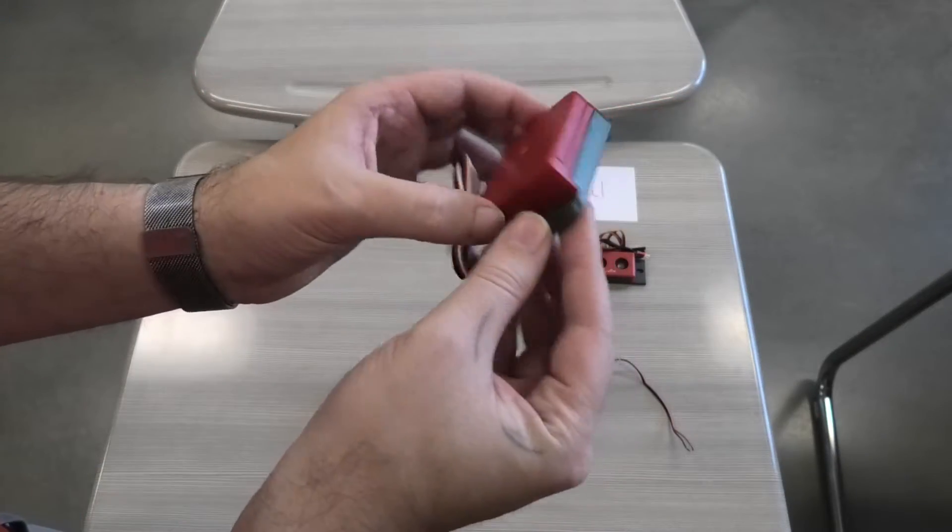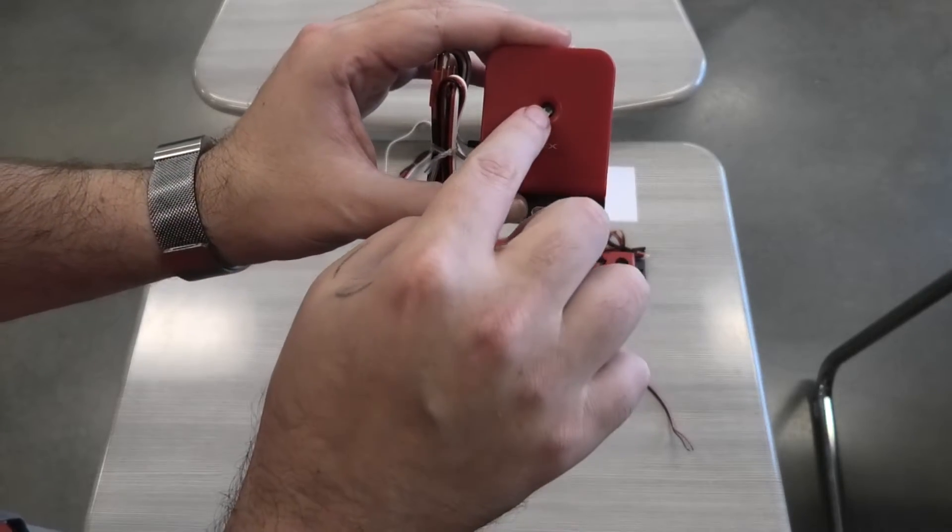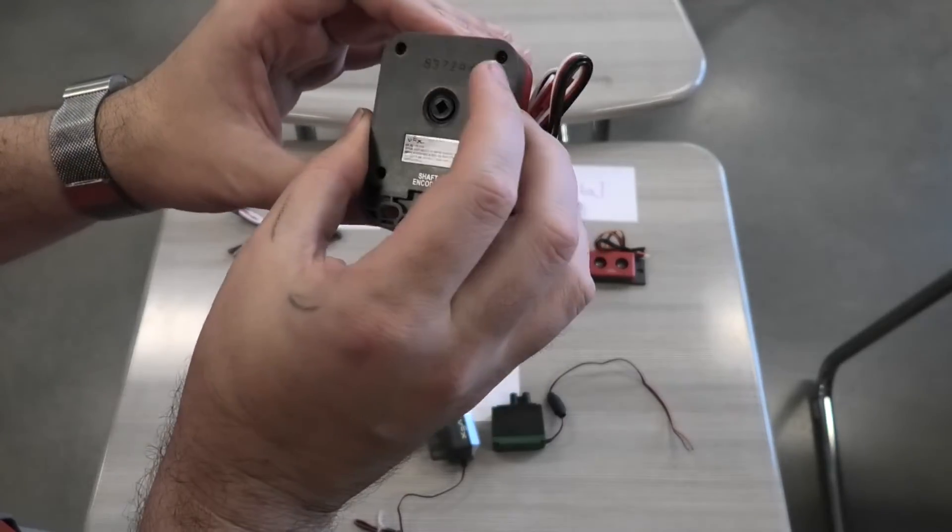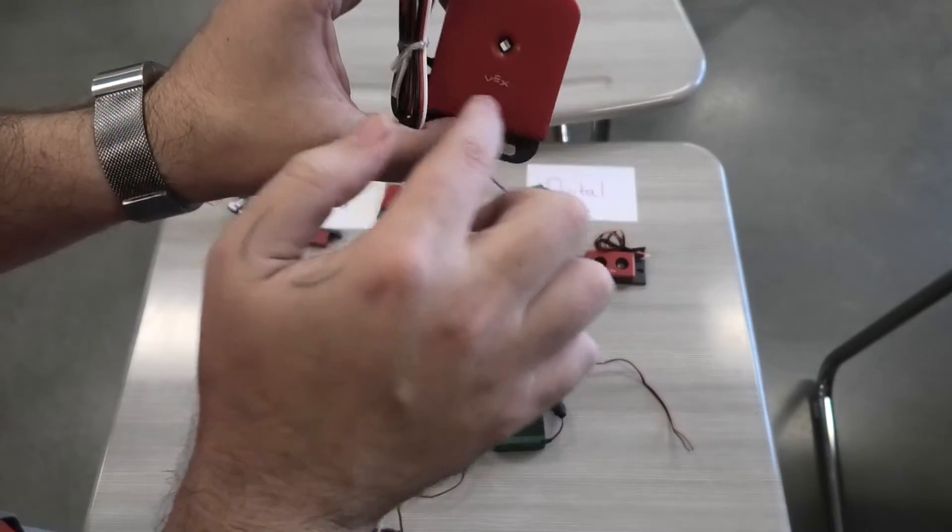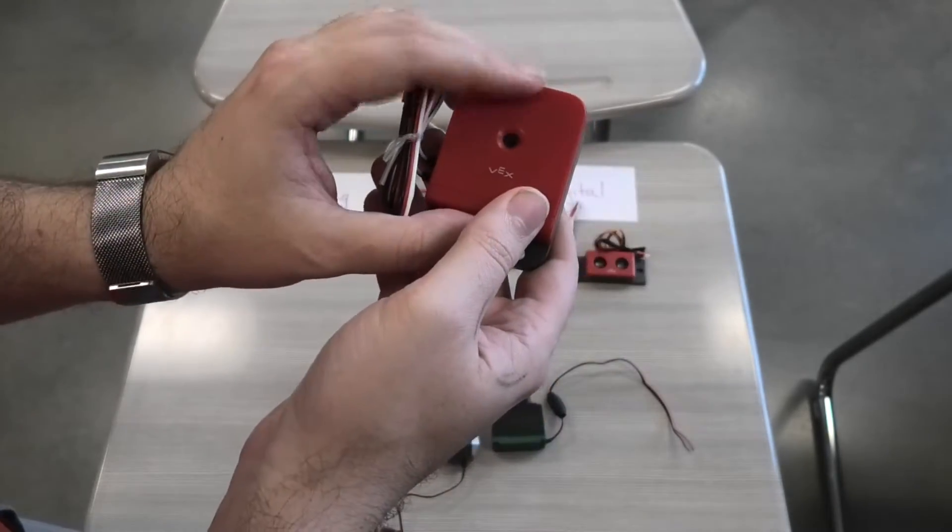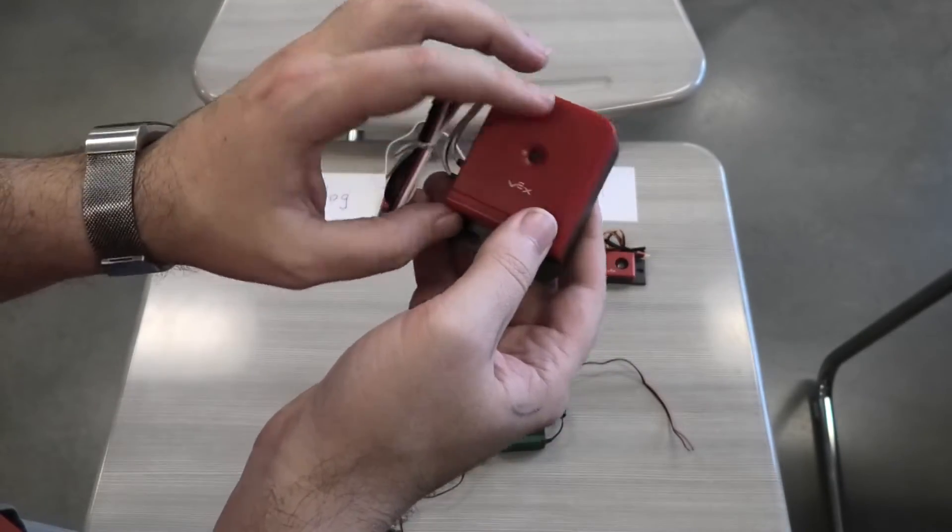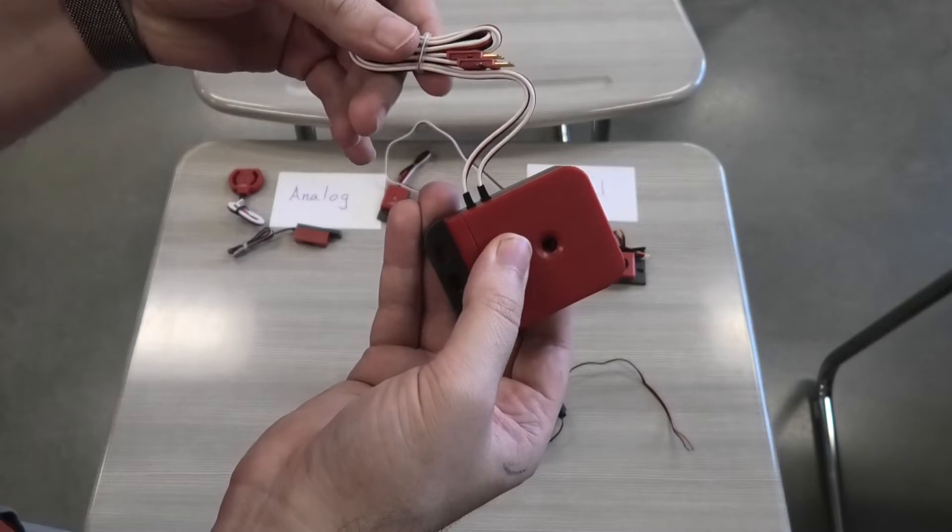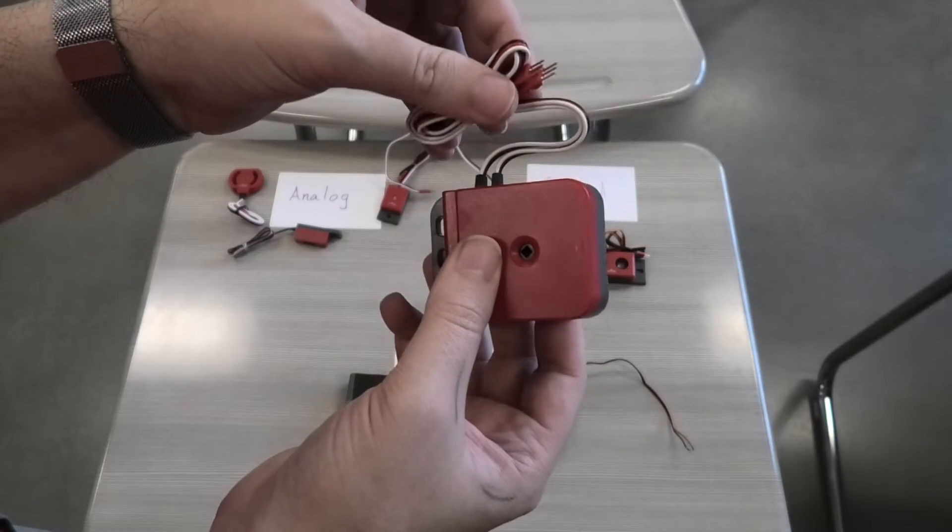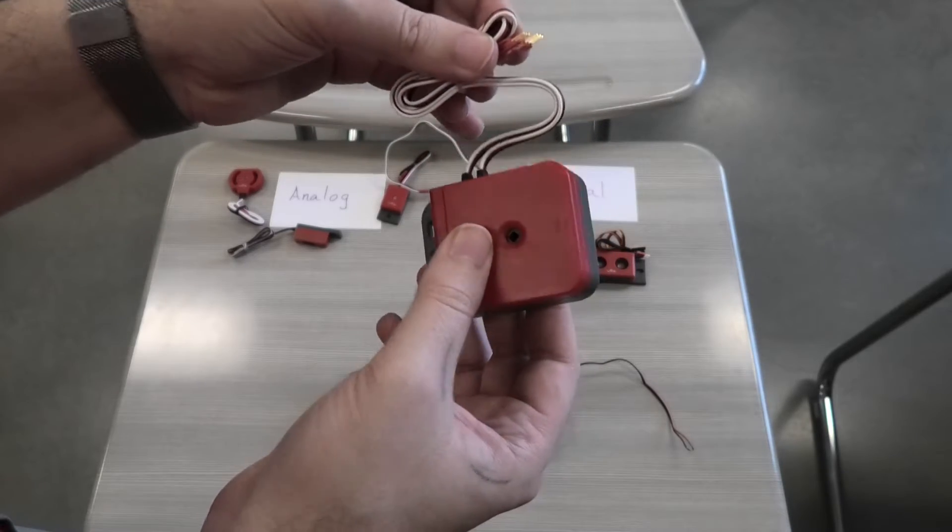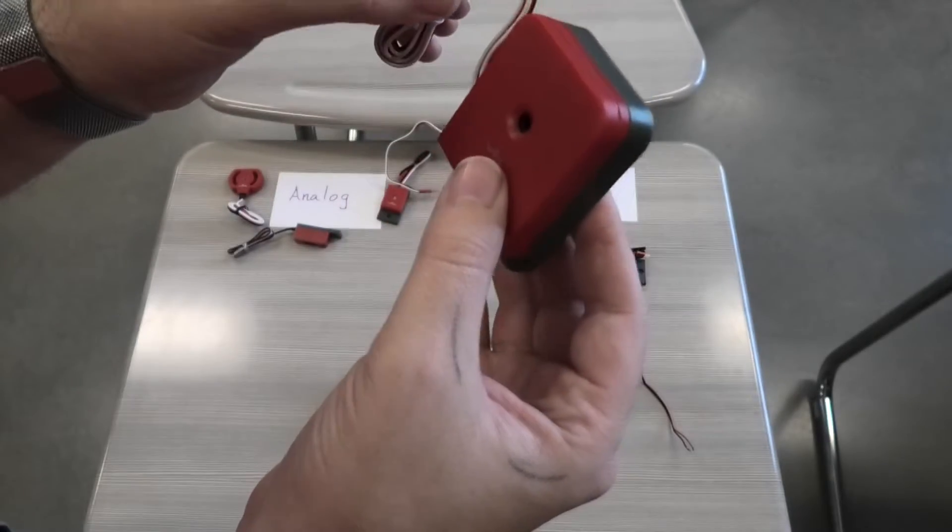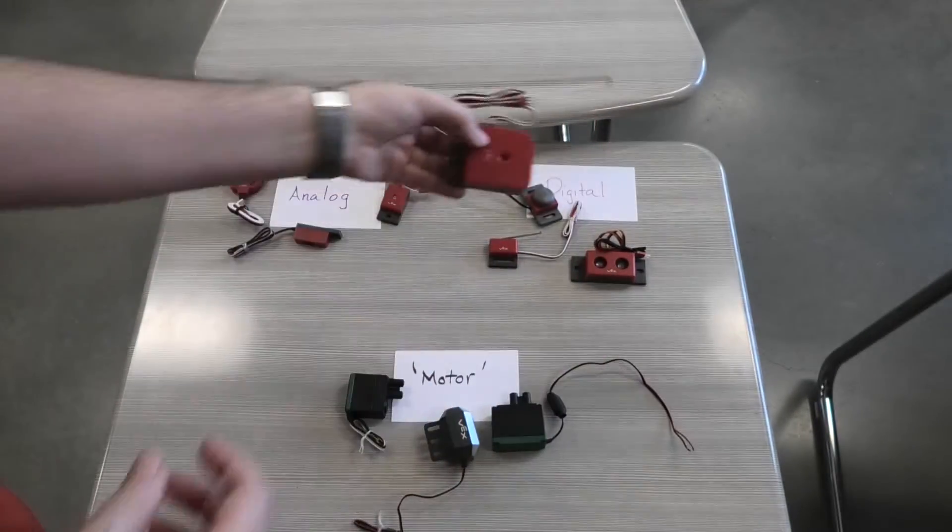This is called a quadrature encoder or a rotation sensor. You stick the drive shaft in here, and as it rotates around, there's a wheel on the inside and it counts the number of rotations that happens inside that wheel. This is a digital sensor, so it actually calculates that value. You have to have two inputs for it, so whenever you wire it inside the Cortex, you have to make sure that you have both wires plugged in side by side to each other.